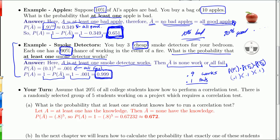Notice this notion of redundancy. Each one of my smoke detectors wasn't particularly good at working, but when you string them together and have three, the probability of at least one working gets very high. So that's the whole nature of redundancy — sort of a safety feature.